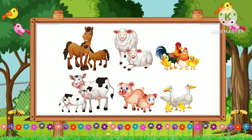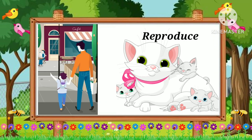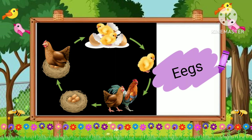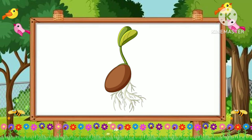Living things reproduce their young ones. Every living thing has a different way to reproduce. Human beings and some animals give birth to their babies, while some animals lay eggs. In case of plants, when a seed is sown into the soil, a new baby plant comes out of it.